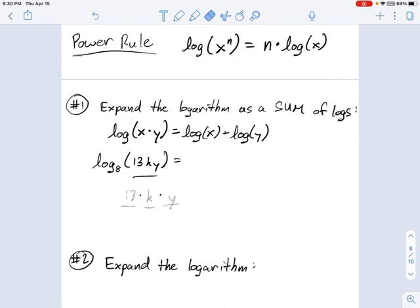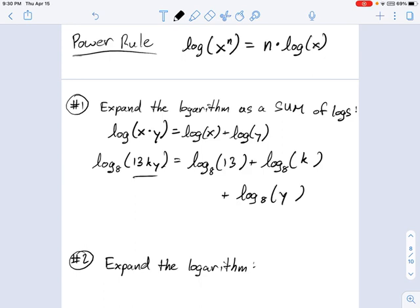When I make this into a sum, I'm expanding this logarithm. So that's going to be log base 8 of something, plus log base 8 of something, plus log base 8 of something. The reason I've left three somethings is because I've got 13 times k times y. So it's just the sum of three logarithms.